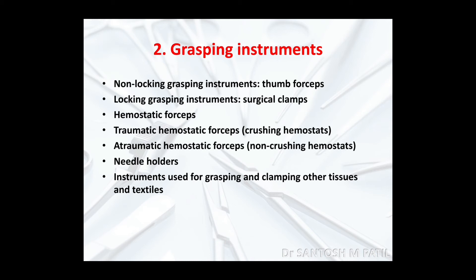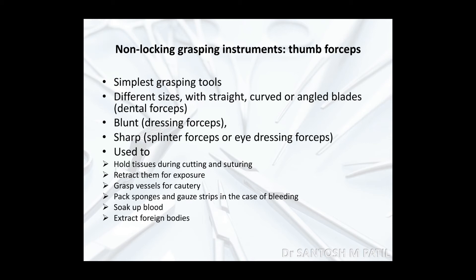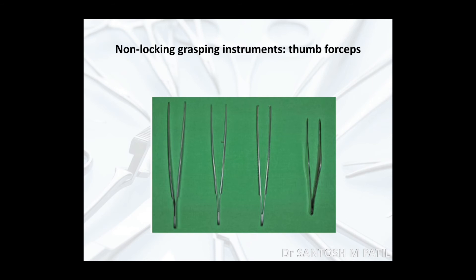Non-locking grasping instruments — or thumb forceps — are the simplest grasping tools, available in different sizes, curved or straight, with wide or angled blades. There are blunt forceps used as dressing forceps and sharp forceps used for eye dressing. The most important uses are holding tissues during cutting and suturing, retracting for exposure such as lifting the skin and subcutaneous tissue for flap raising, and grasping subcutaneous bleeders. These are images showing thumb forceps — the first is blunt and the center one has teeth.